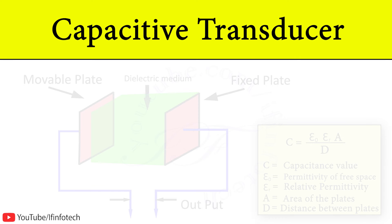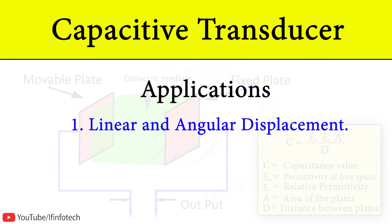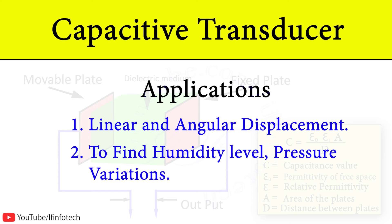The capacitive transducer has applications in the field of linear and angular displacement. It is used to find humidity level and to find pressure variation.